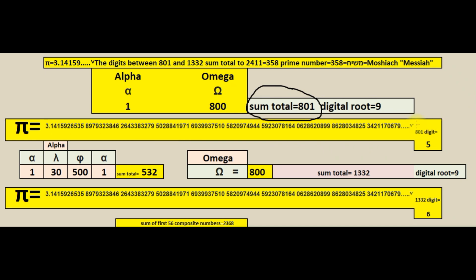At position 801 in pi is the number 5. Spelling out Alpha and Omega in Greek, we find that the words have a sum total Greek letter value of 1332. At position 1332 in pi is the number 6.